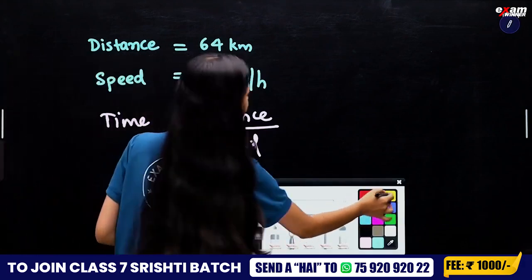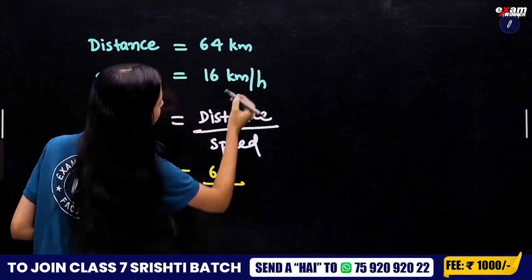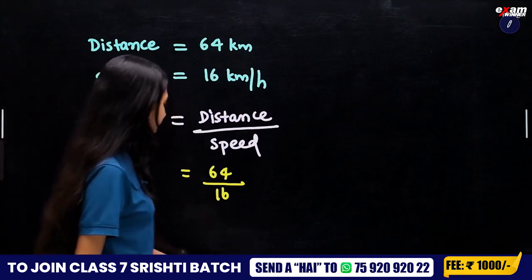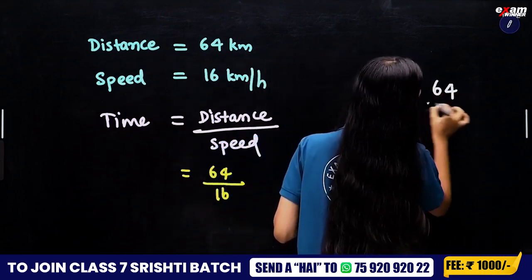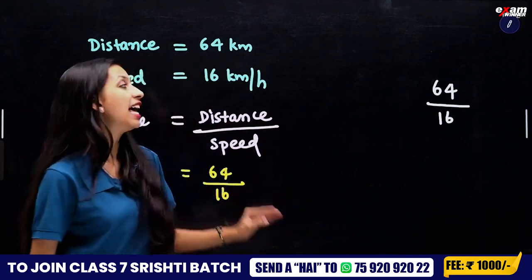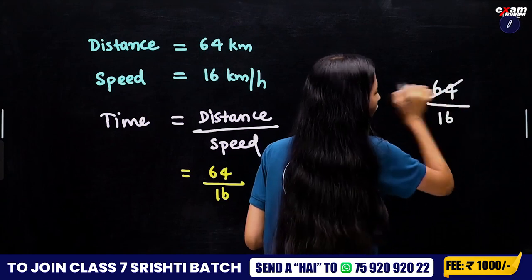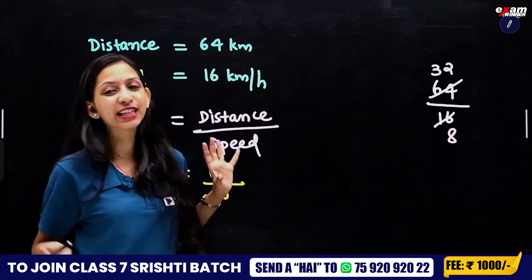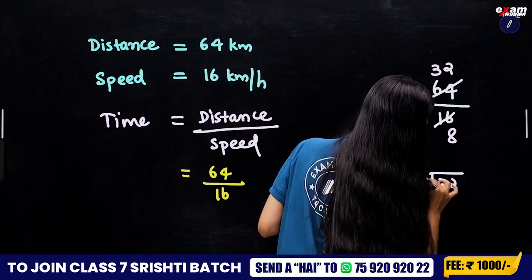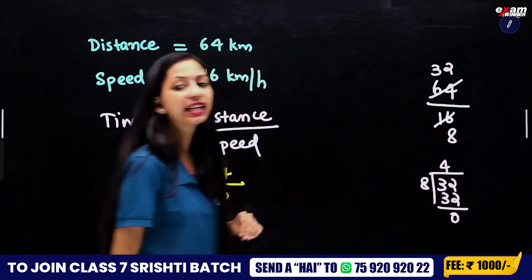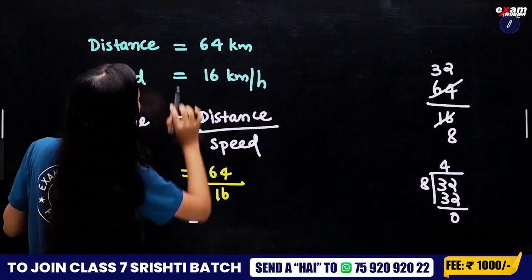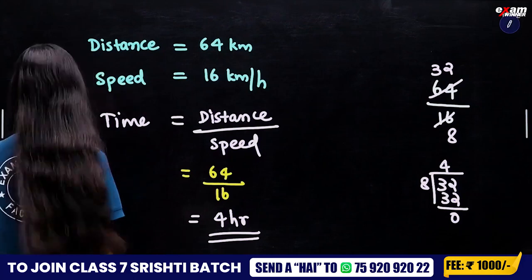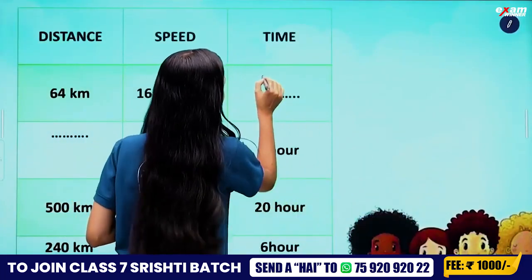We are talking about distance divided by speed. Distance divided by speed is 64 divided by 16. So how do we get 4 hours? We get 4 hours as our answer — that's the first one done.